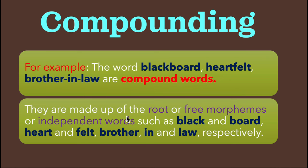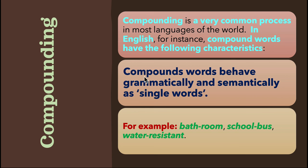For example, the words blackboard, heartfelt, and brother-in-law are compound words. They are made up of free morphemes or independent words: black and board (blackboard), heart and felt (heartfelt), and brother-in-law respectively. Compounding is a very common process in most languages of the world. In English, compound words behave grammatically and semantically as single words — for example, bathroom, school bus, water-resistant.